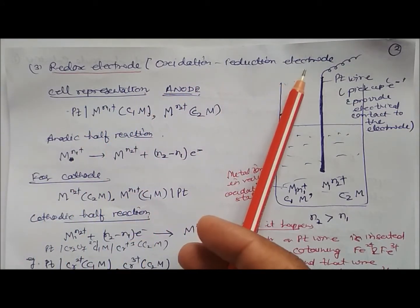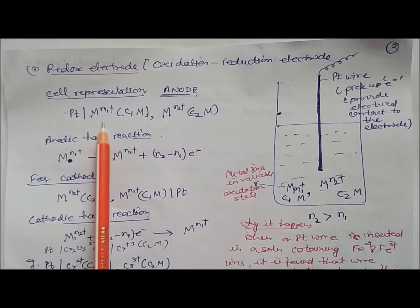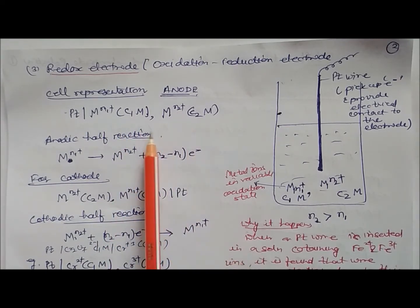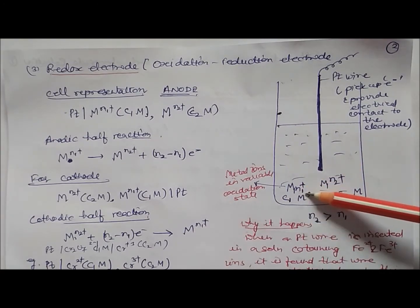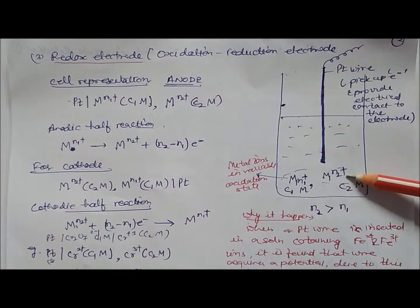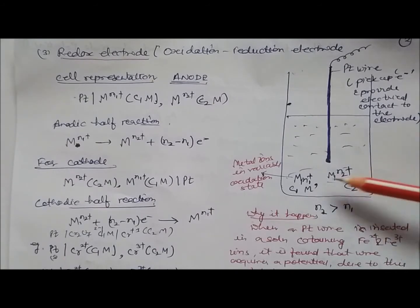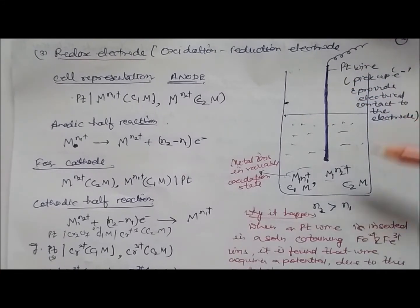The third type is redox electrodes, also called oxidation-reduction electrodes. The cell representation at the anode is: Pt | M^n+(C1 M), M^(n+2)+(C2 M). This represents a platinum wire dipped into a solution containing two ions — M^n+ at concentration C1 and M^(n+2)+ at concentration C2 — with different oxidation states. The higher charge ion and lesser charge ion are both present. Platinum is used to pick up and provide electron contact to the electrode.